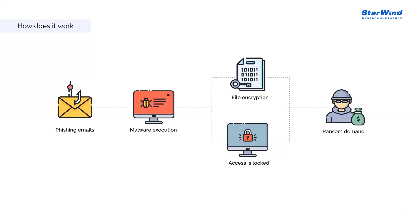Step three is the ransom demand. After completing the encryption process, the ransomware proceeds to make a ransom demand. Various variants implement this differently, but commonly they alter and display the desktop background with a ransom note, or place text files containing the ransom note in each encrypted directory. Typically these notes demand a specific amount of cryptocurrency in exchange for access to the victim's files. If the ransom is paid, the ransomware operator provides either a copy of the private key used for symmetric encryption or the symmetric encryption key itself, which the victim can use with the provided decryptor program to reverse the encryption and recover their files.